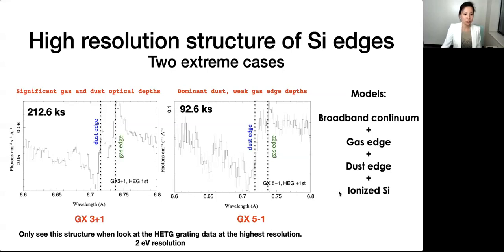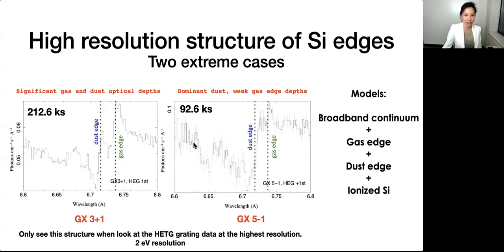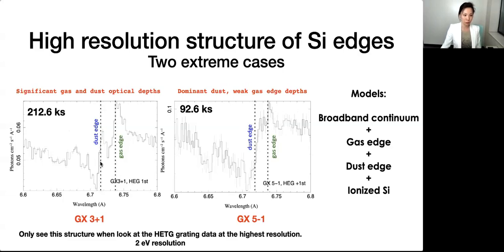We use Chandra HETG grating data. They are well calibrated and pile-up-free, which is specifically designed to measure the silicon edge. With this high resolution from Chandra, here are two examples in our survey. On the right, the spectrum shows GX5-1 with 92.6 kilosecond exposure time — this is the silicon gas edge and this is the silicon K dust edge. We can say this source is mainly dust-dominated with only minor gas contribution to the edge. On the left, it is the spectrum for GX3+1 with about 200 kilosecond exposure time, and both gas and dust contribute to the silicon edge.